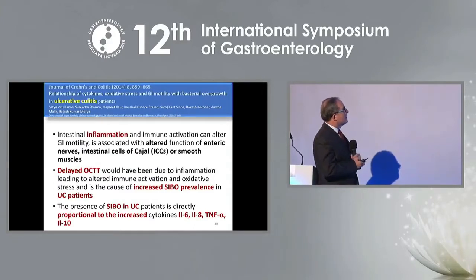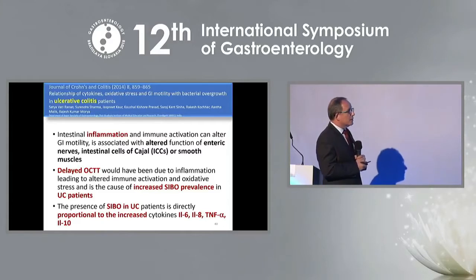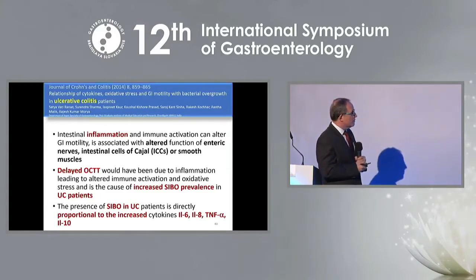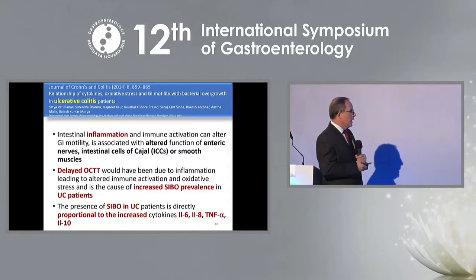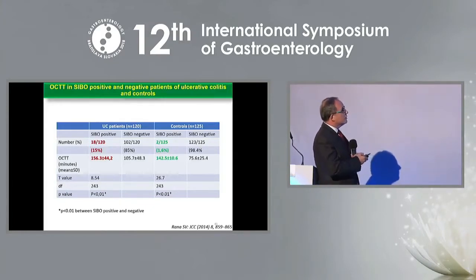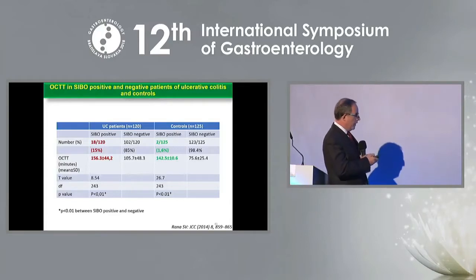In ulcerative colitis patients, intestinal inflammation and immune activation lead to altered function of enteric nerves, intestinal cells of Cajal, or even smooth muscle. Delayed OCTT and increased SIBO prevalence are seen in these patients. The presence of SIBO in UC patients is directly proportional to increased cytokines, and the number of SIBO-positive patients is increased compared to controls. OCTT is also prolonged compared to controls.